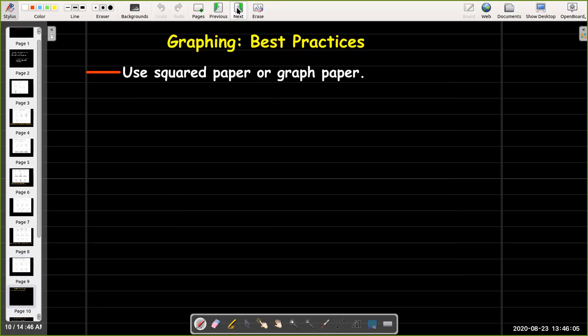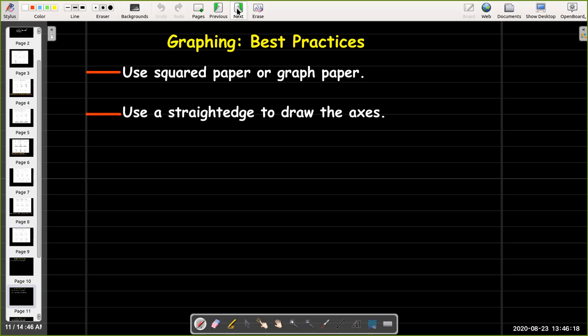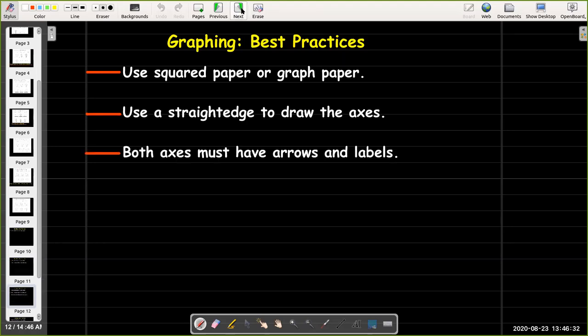So in summary, what are our best practices for graphing? To be able to have the clearest, most useful graph, we'd like to use squared paper or graph paper. We want our graph to look clear. So if we have a line which is straight, let's take the time to use a straight edge to draw the axes, or any other straight line.